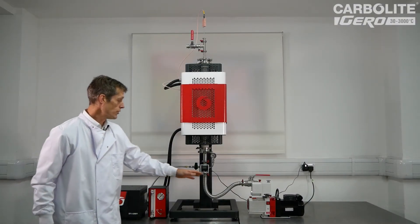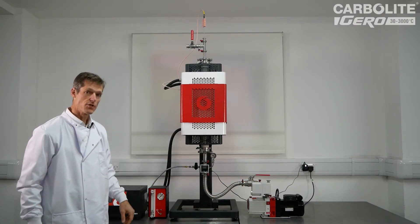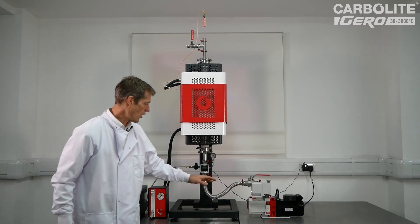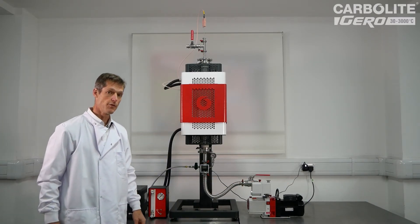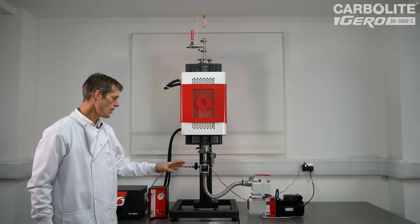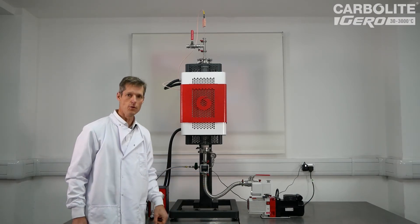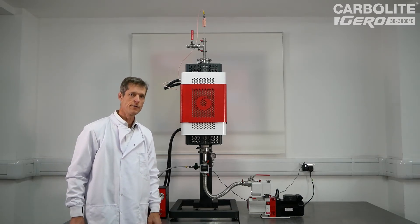So this is one of two vacuum pump systems that Carbolite offers. This is the more entry level system. It consists of a two-stage rotary vane pump, which can achieve a base pressure of better than 0.1 millibar. The higher level system would be a turbo pump with base pressure of about 10 to the minus 5 millibar.